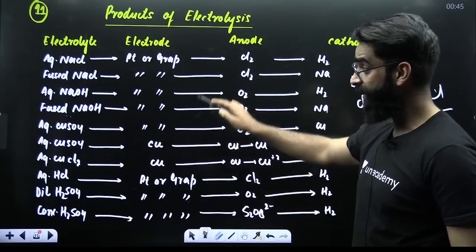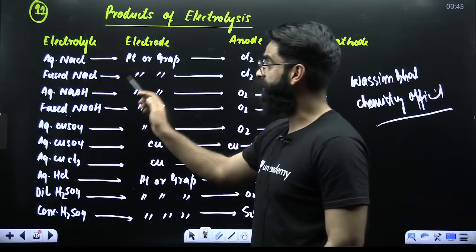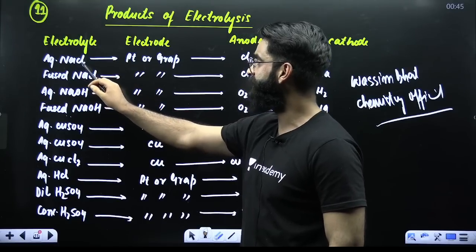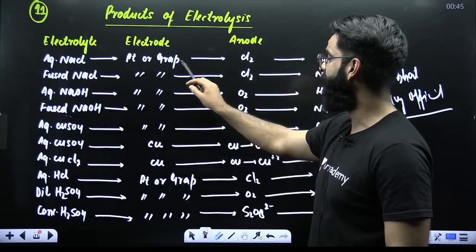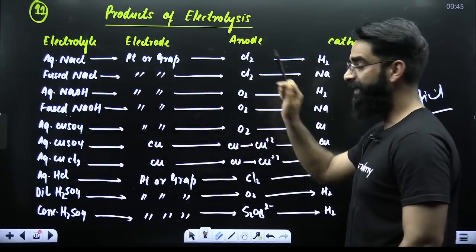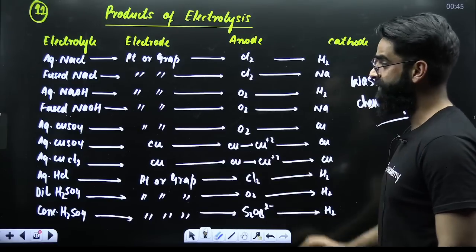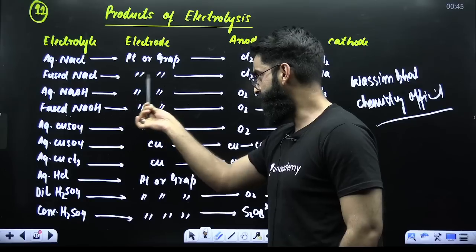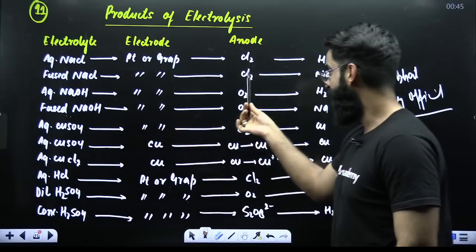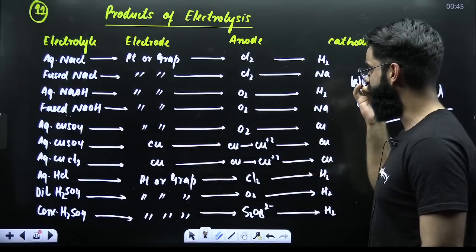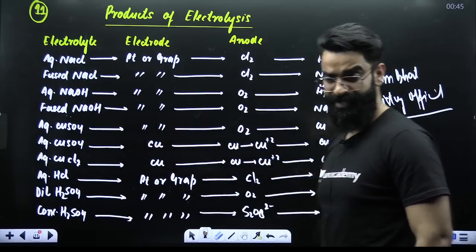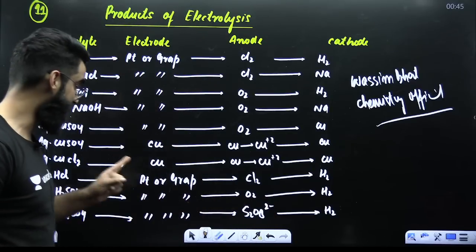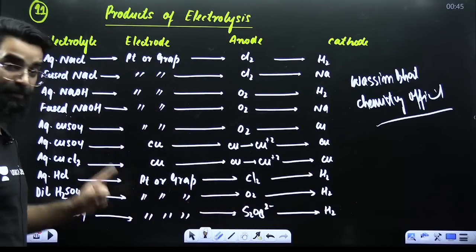Products of electrolysis — this table is super important. For aqueous NaCl with platinum or graphite electrodes: Cl₂ gas is liberated at the anode and H₂ gas at the cathode. For fused NaCl with the same electrodes: Cl₂ is liberated at the anode and Na is deposited at the cathode. Please remember this table on priority.